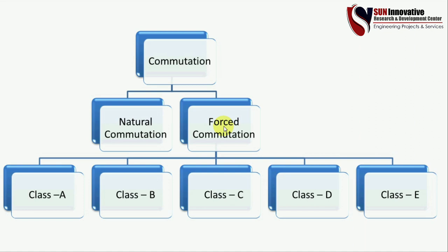There are different types of commutation methods. As you can see in the diagram, there is natural commutation and forced commutation. Forced commutation is further classified into types A, B, C, D, and E — so there are five different types of classifications in forced commutation.